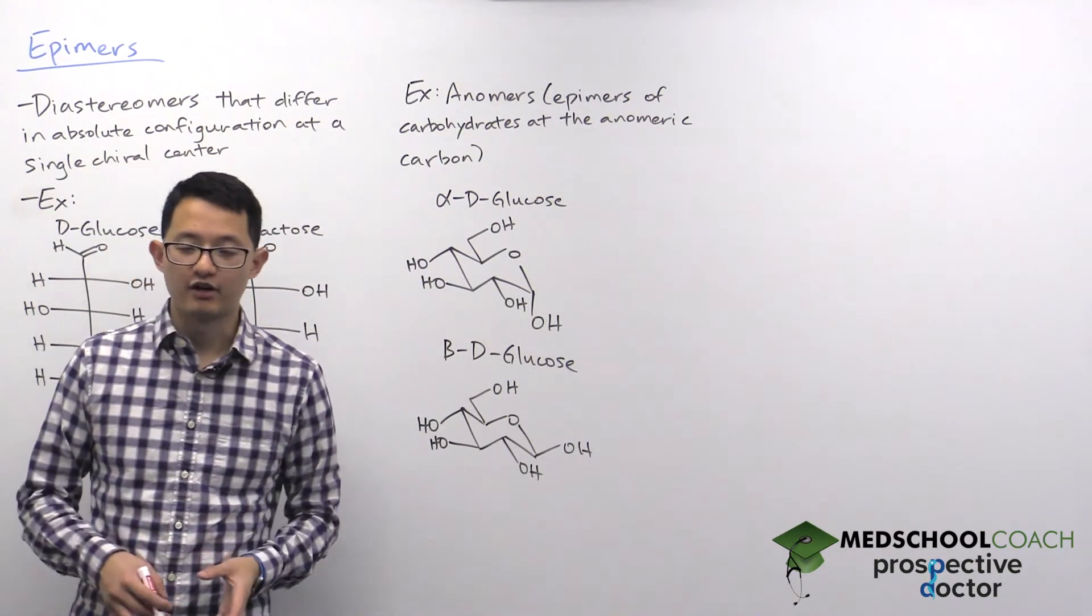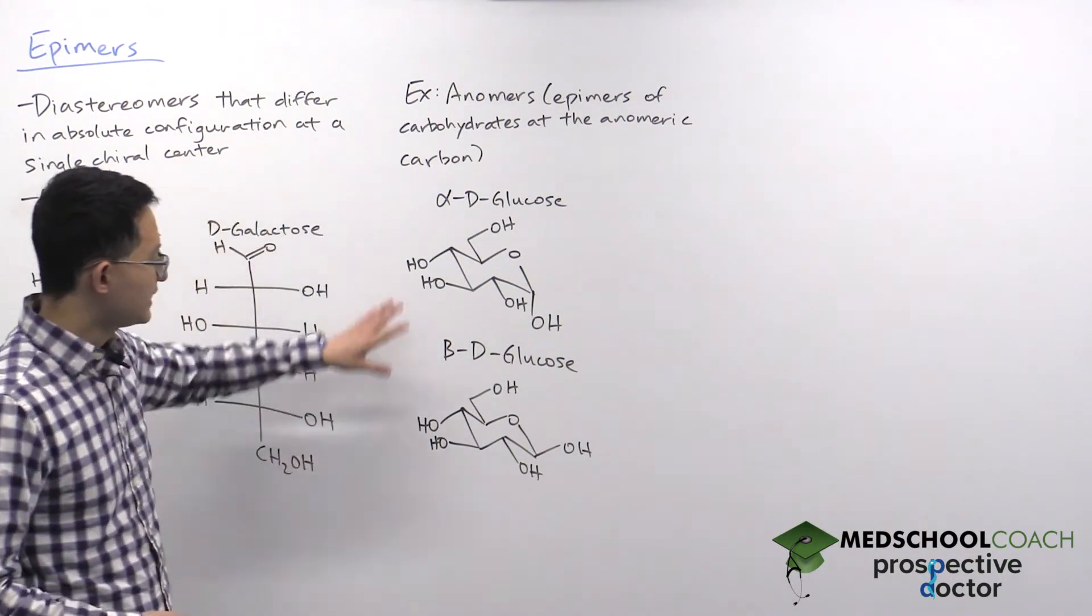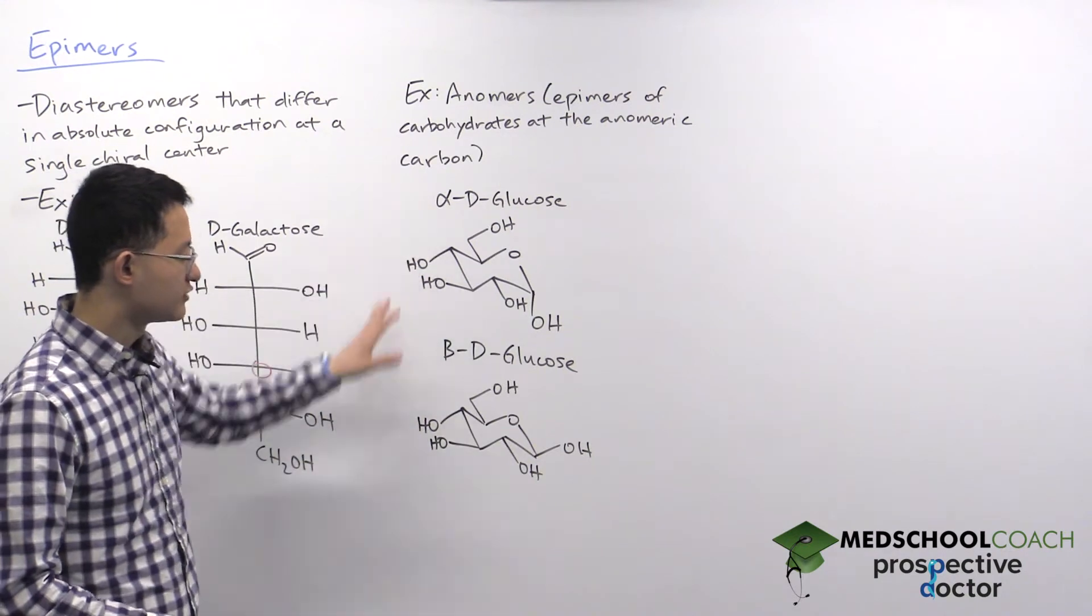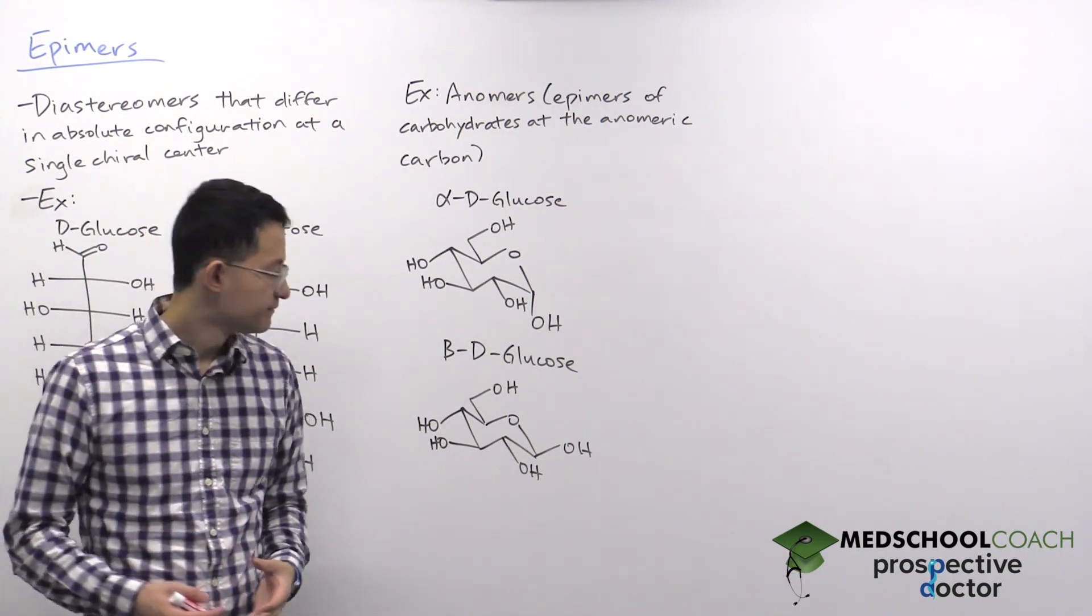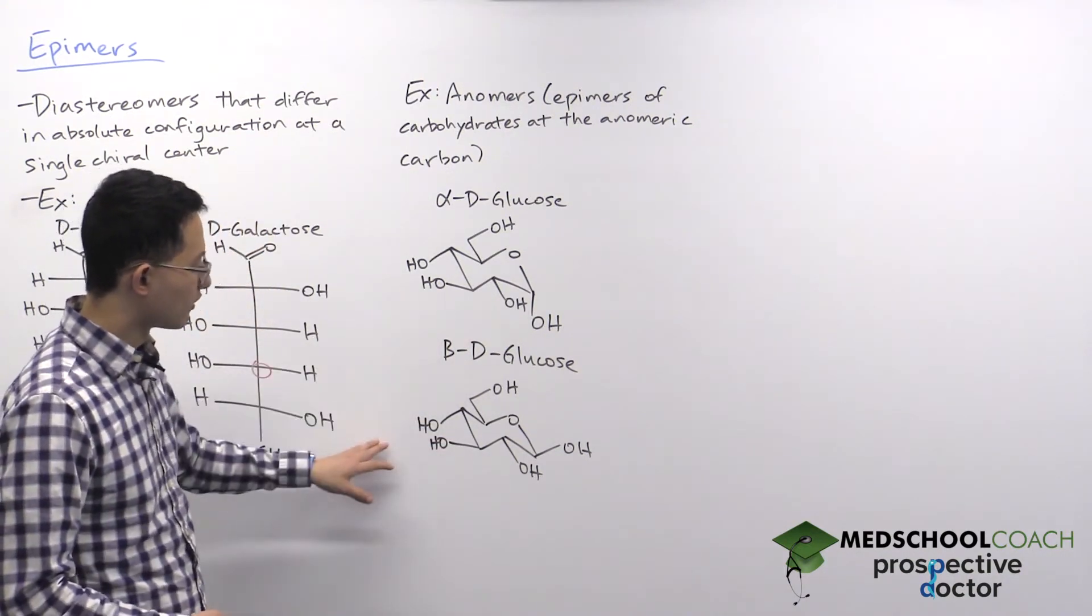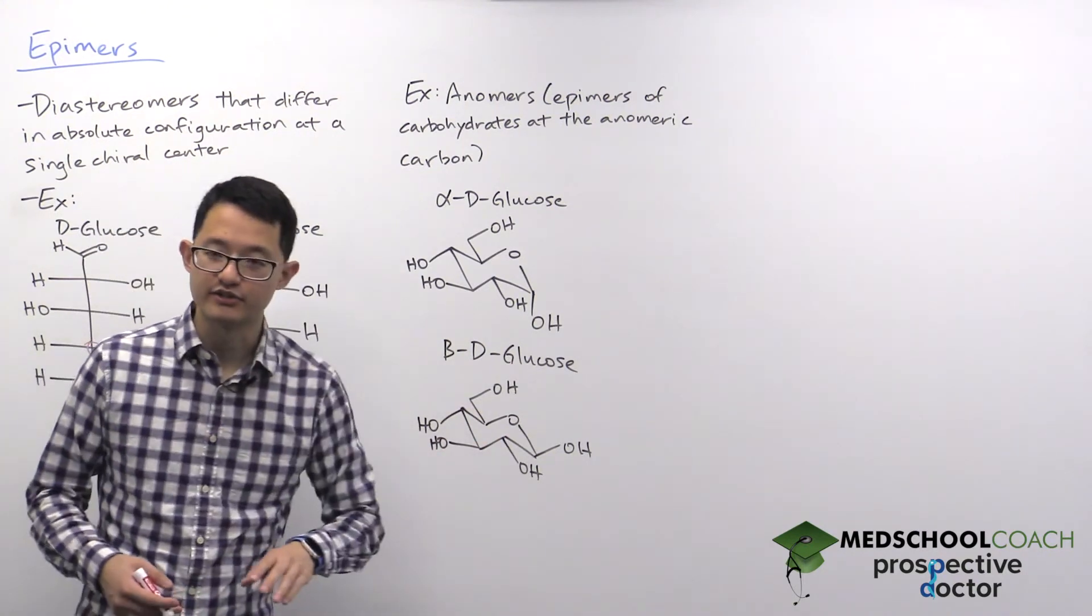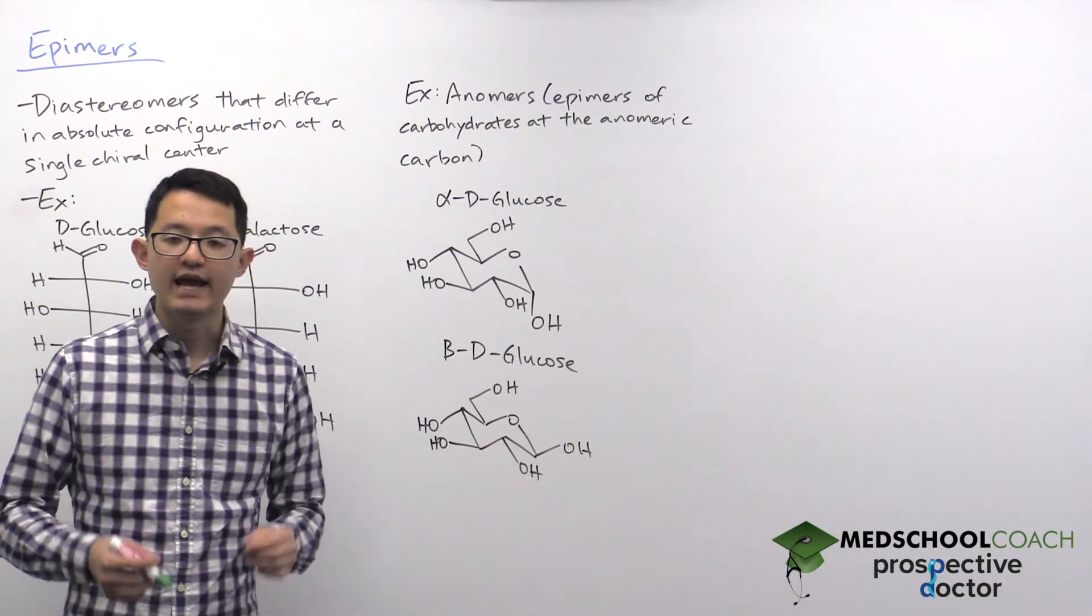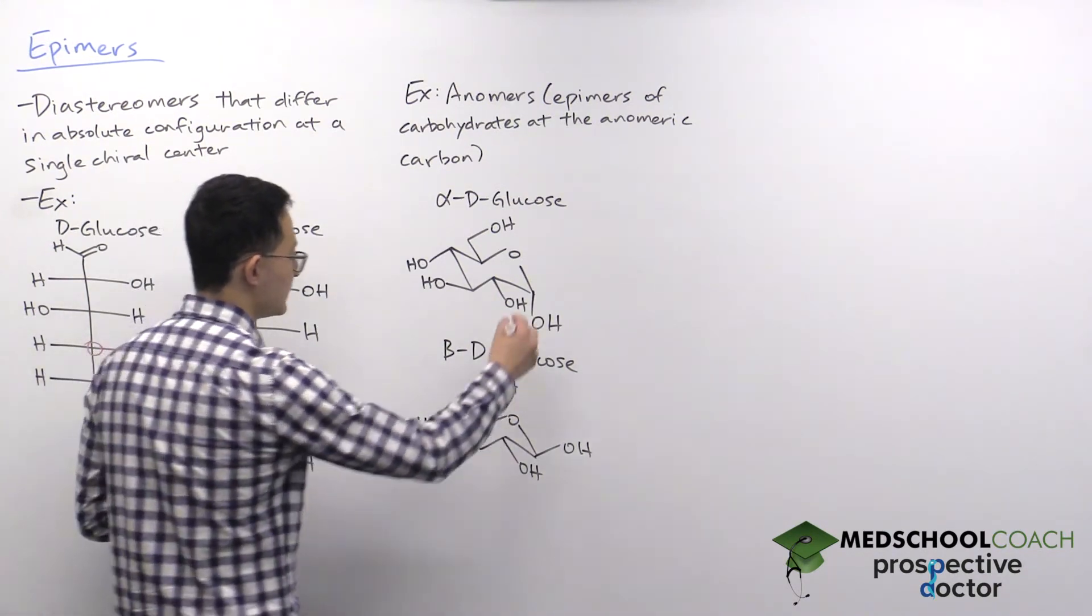We'll talk more about anomeric carbons and carbohydrates in subsequent lectures, but at least you can see here that I've got two molecules, alpha-D-glucose and beta-D-glucose, that are anomers of each other. Here you can see glucose in its cyclic form, and again, if you look at all the atoms at the chiral centers, you're going to see that the chiral centers match up at every single chiral center except this one.